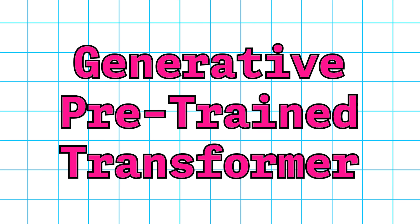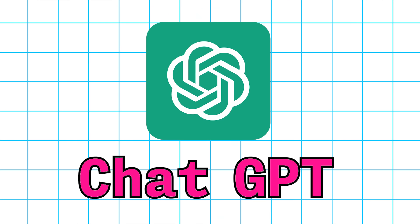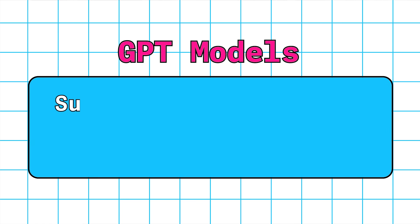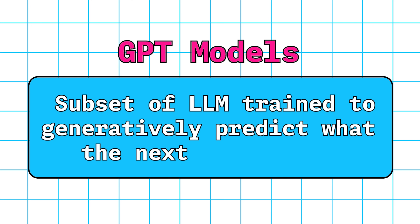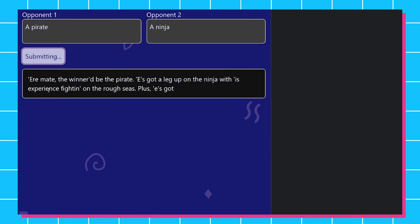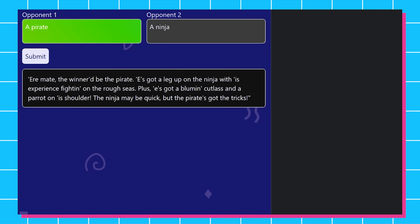GPT stands for Generative Pre-trained Transformer. You may be familiar with tools like ChatGPT, which are types of GPT models. A GPT model is essentially a subset of an LLM that is trained to generatively predict what the next word may be. When you give these GPT tools some sort of input, they can process that information with their parameters and embeddings, and essentially predict the next word, then feed that back to itself to predict the next word, and keep going until it reaches what it thinks is the natural end of the thought.